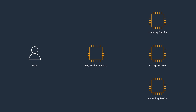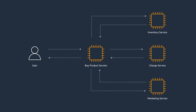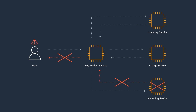One problem I remember was a set of synchronous calls between our services. The user was calling a service to buy a product. Then this service was orchestrating calls to other services to reduce inventory, charge for the transaction, and send some marketing emails. The problems started when, for instance, the service to send the marketing emails was taking too long. That delay in the response was propagated to the buy product service and then to the customer. Even worse, when the marketing service was down, the customer just received an error. Those problems impacted many of our customers.